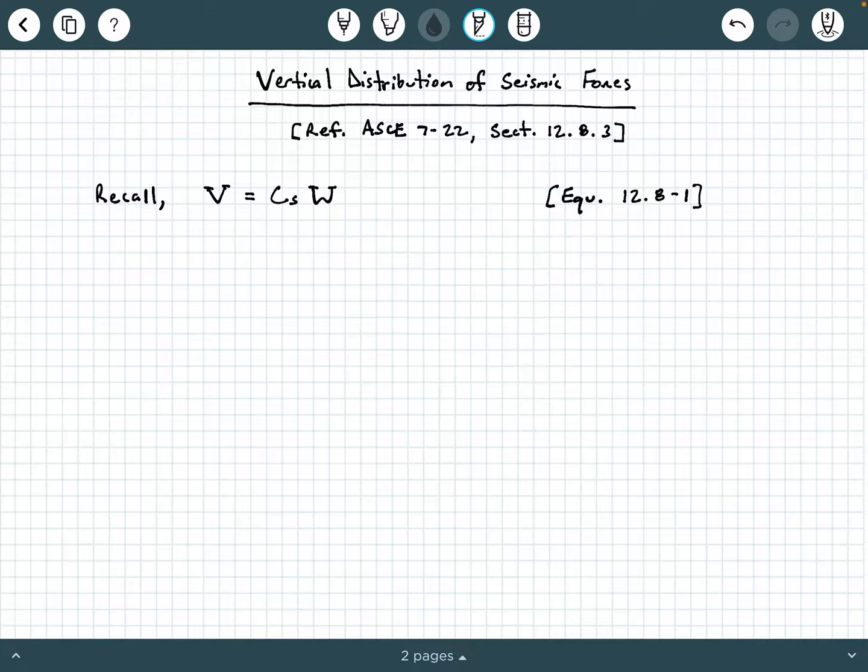That should be around page 125. So as we get started, we first want to recall that the seismic base shear force, which is capital V, is equal to C sub S times W. C sub S is the seismic response coefficient, and according to ASCE 7-22, we can determine C sub S by one of two methods. And then capital W is the effective seismic weight of the entire structure. This equation is given in equation 12.8-1.